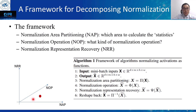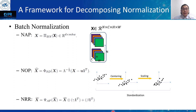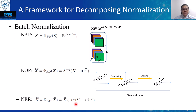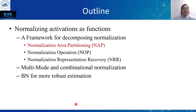Taking BN as an example: BN regards each spatial position in the feature map as a sample, and the NAP is formulated such that the second dimension indexes the set of samples used to compute the estimators. This means statistics are calculated along the batch, height, and width dimensions. The NOP of BN is a standardization operation, and the NRR is formulated as an affine transformation. In the following slides, normalization methods with different NAP will be introduced, with the default NOP being a standardization operation and NRR being an affine transformation.